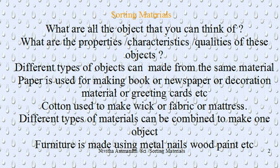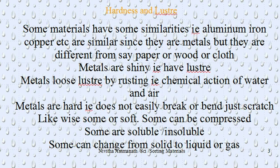Different types of materials can also be combined to make one object. For example, to make a table you need a wooden panel, nails, a metallic hammer to nail them, and paint to paint it. Different types of materials are mixed or combined together to form one object — like a table, chair, or furniture. So materials are of different types, objects are of different types, and different combinations can be used to make different objects.